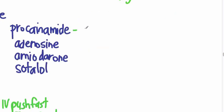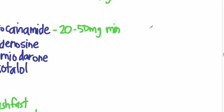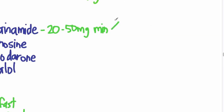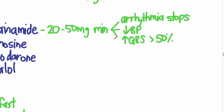Procainamide is started at 20 to 50 milligrams per minute, and you keep that going until one of a couple things happens: either the arrhythmia stops, there's a drop in blood pressure, the QRS widens about 50 percent, or 17 milligrams per kilo are given.